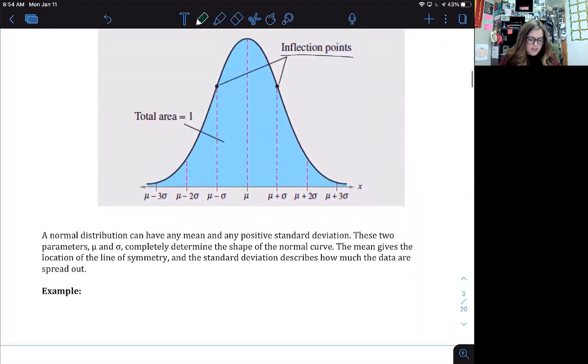So a normal distribution can have any mean and any positive standard deviation. These two parameters mu and sigma completely determine the shape of the normal distribution. The mean gives the location of the line of symmetry and the standard deviation describes how much the data are spread out.